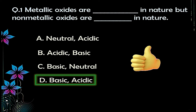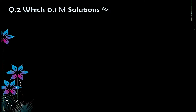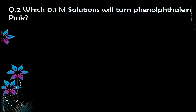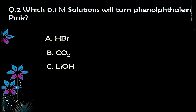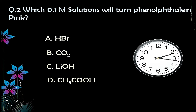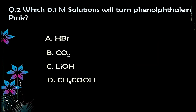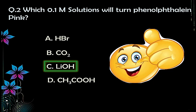Question number two: which 0.1 molar solution will turn phenolphthalein pink? Options: A) HBr (hydrogen bromide), B) CO₂ (carbon dioxide), C) LiOH (lithium hydroxide), D) CH₃COOH (acetic acid). The correct answer is option C — lithium hydroxide — because lithium hydroxide is the only base among these substances, and phenolphthalein turns pink in bases or alkalies.